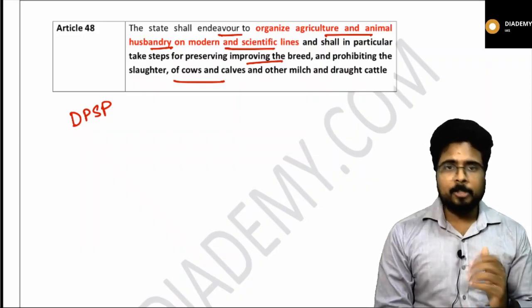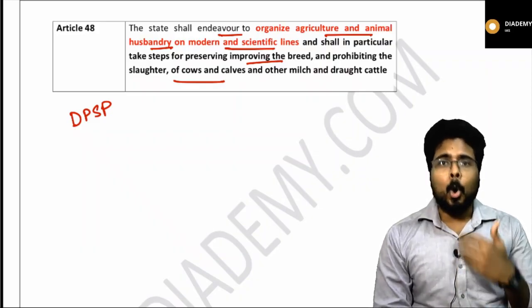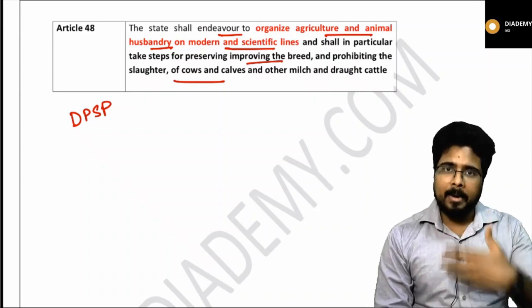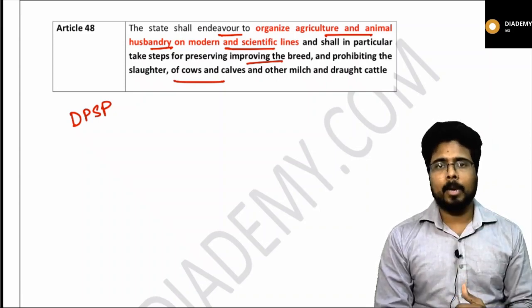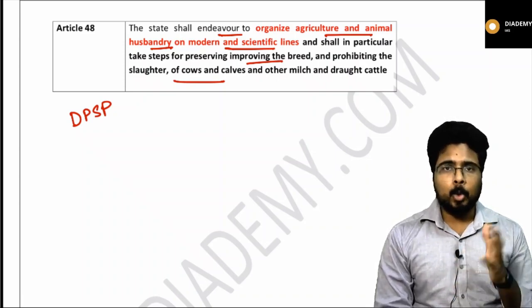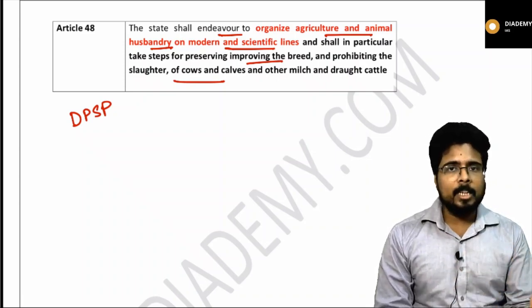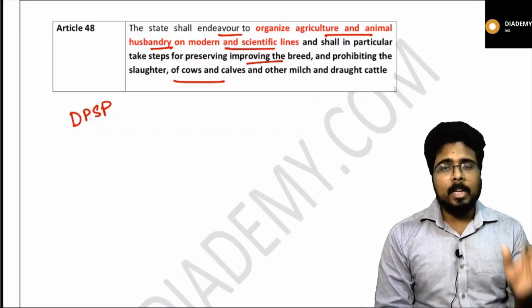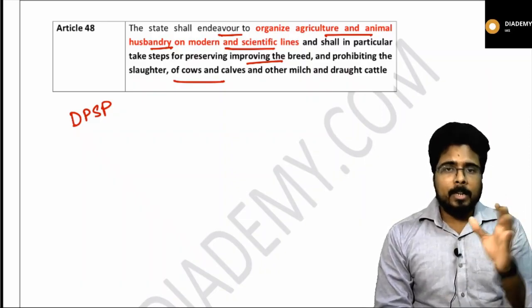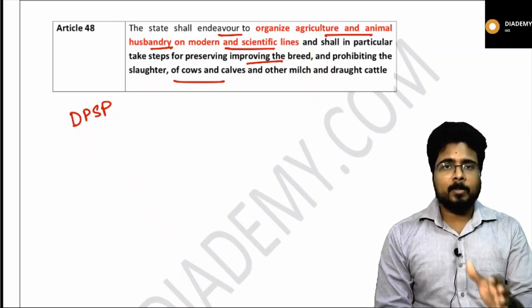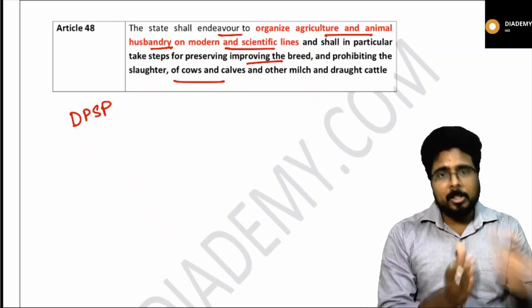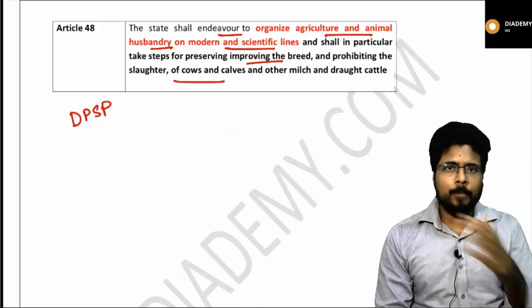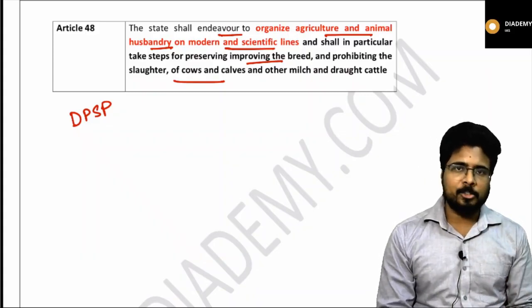From DPSP, know all the important amendments that were added later. Also know the Gandhian principles, the social principles and the liberal principles — know all of them separately. This is what you have to know from DPSP.